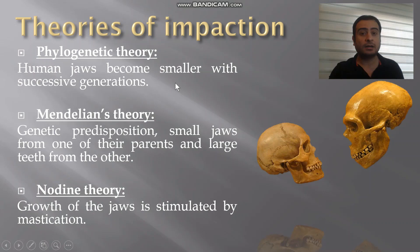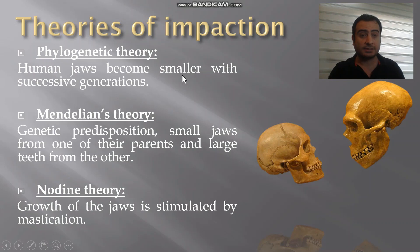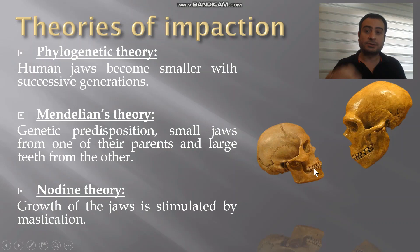Regarding the phylogenetic theory, it entails that human jaws become smaller with successive generations. As each generation follows the next, the jaws tend to be smaller, and hence the third molar, being the last tooth to erupt, cannot find the space to erupt in the right position, causing impaction.